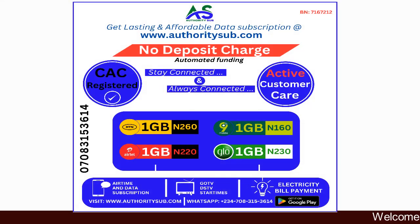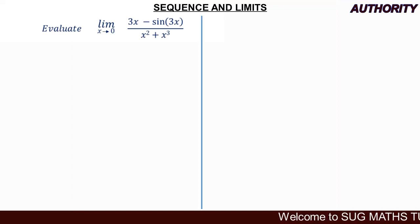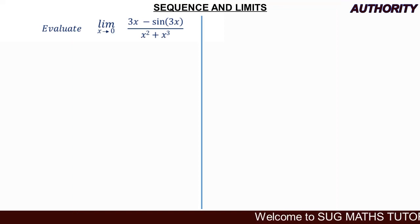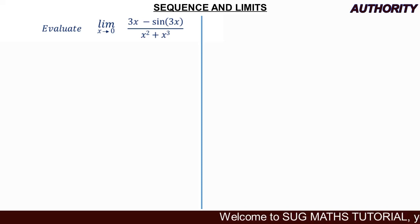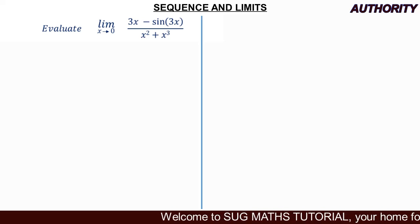Alright, welcome. Without wasting much of our time, let's take a look at this question on limits: evaluate the limit as x approaches 0 of (3x minus sine 3x) all over (x squared plus x cubed).